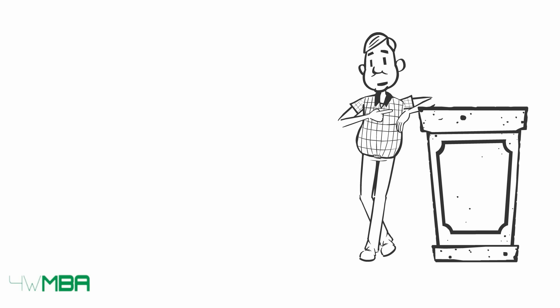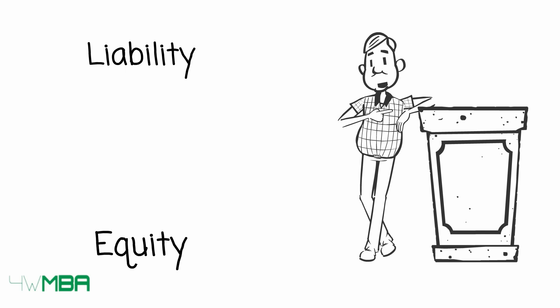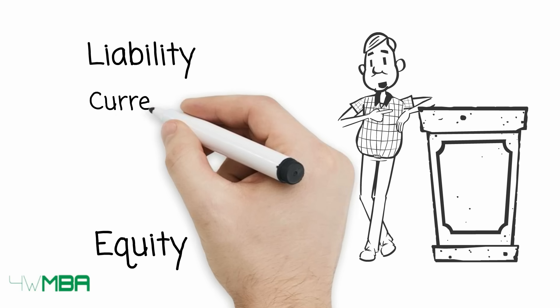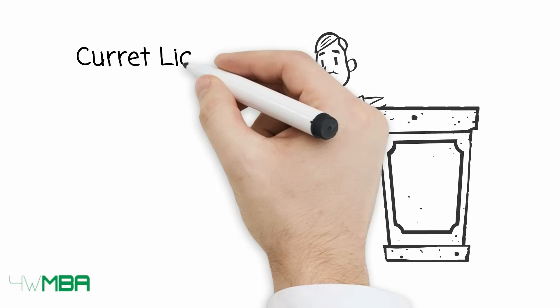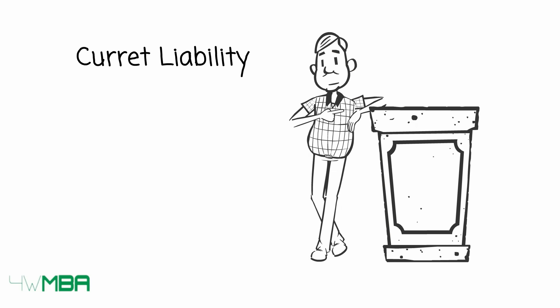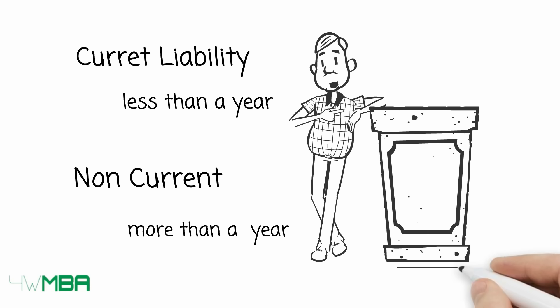On the other side of the balance sheet, we have the liabilities and equity. Liabilities are comprised of current liability and non-current liability. Current liabilities stay on the balance sheet for less than a year. Non-current liabilities stay for more than a year.